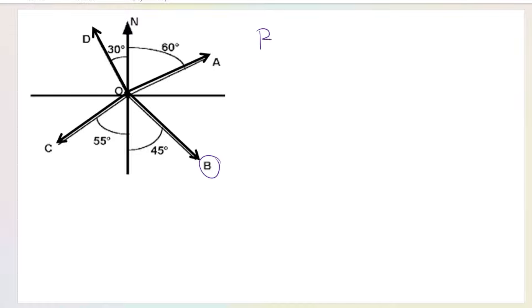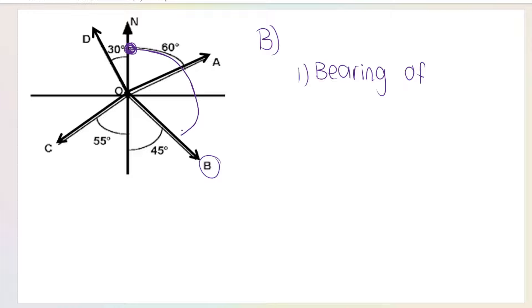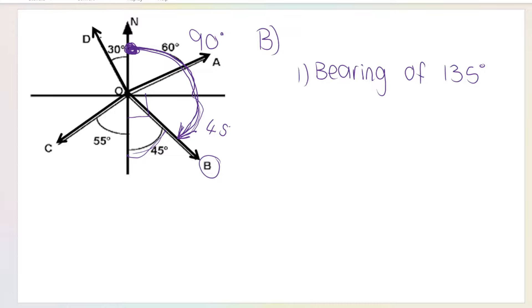Let's do vector B. Starting with the bearing method — bearing is the angle measured clockwise from north. The angle isn't labeled, so we work it out. To get from north to east is 90 degrees, then we add this bit over here. If the labeled angle is 45, the other part must also be 45, because together they give 90. So it's 90 plus 45, which is 135 degrees. From the north line all the way to vector B is 135 degrees.